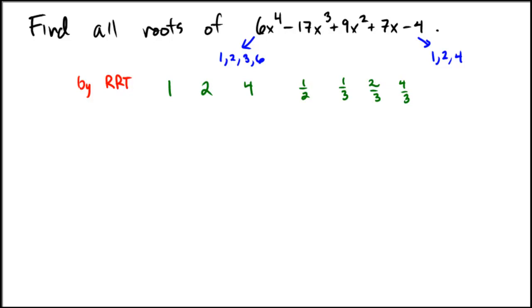And then finally, with that leading 6, we could possibly go 1 over 6, 2 over 6, or 4 over 6. And each one of these is technically either positive or negative. It could be either a positive or a negative solution.